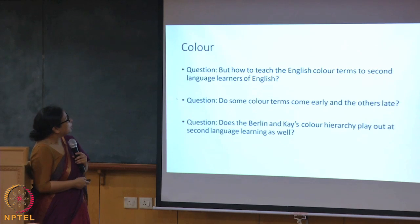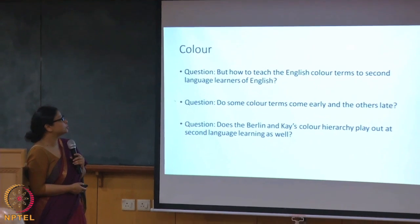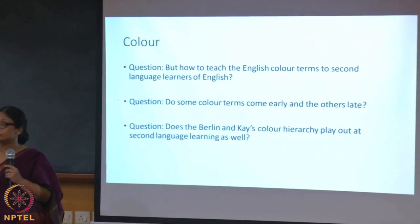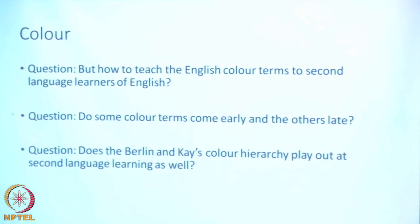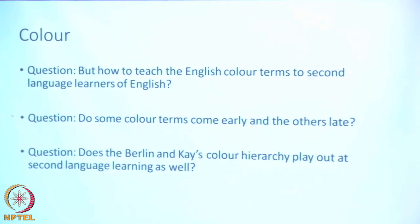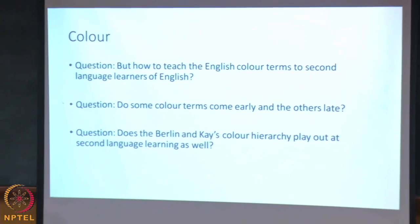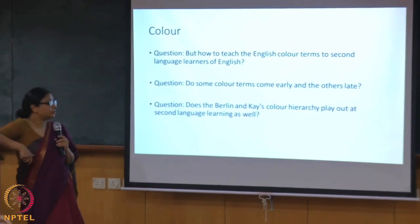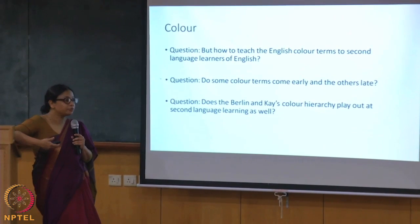However, the question is how do we teach English color terms to second language learners whose language may not have the same color terms? Would sub-color terms come earlier and others come late? For something as difficult as magenta or buff, how would you teach that color? Would we find the Berlin and Kay color hierarchy play out a role there? Maybe some theoretical insights from this kind of study could be taken to the language classroom as well.